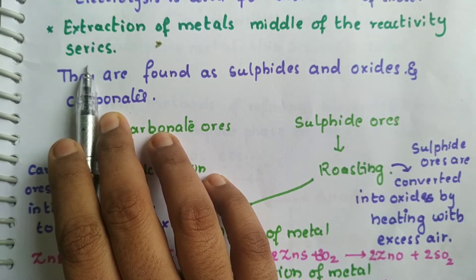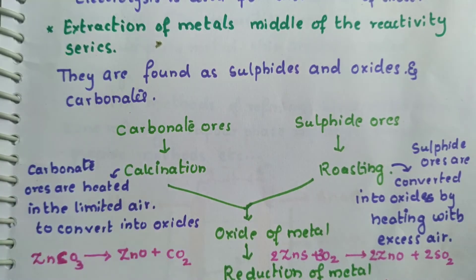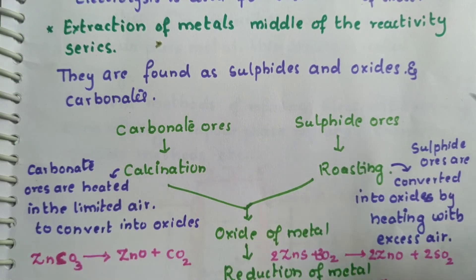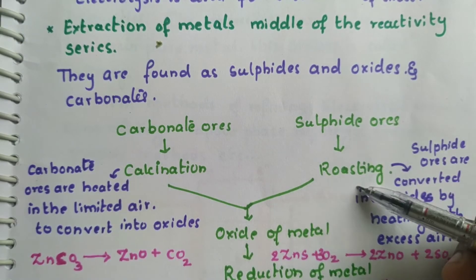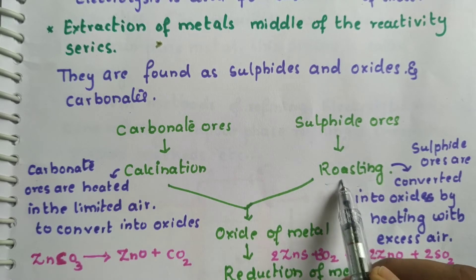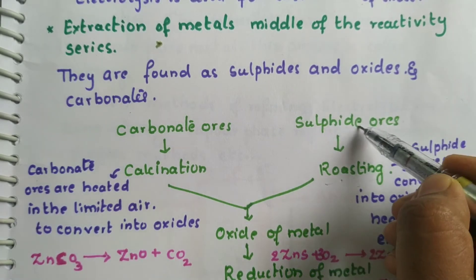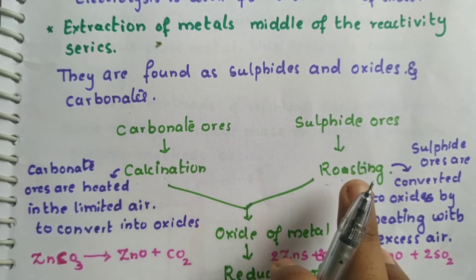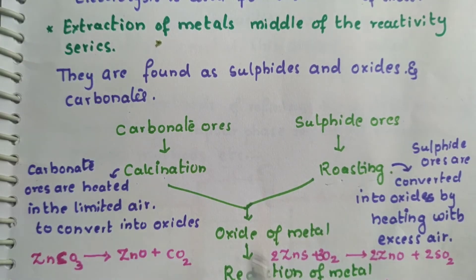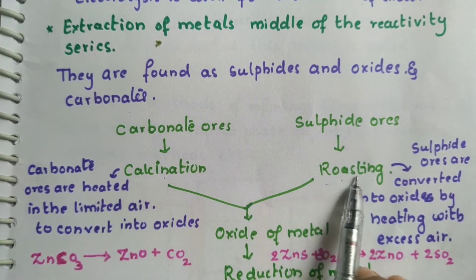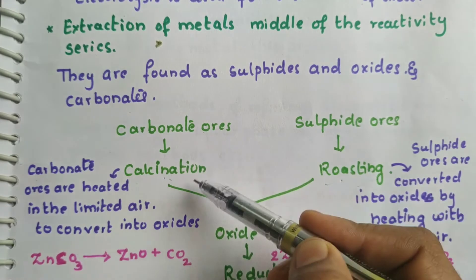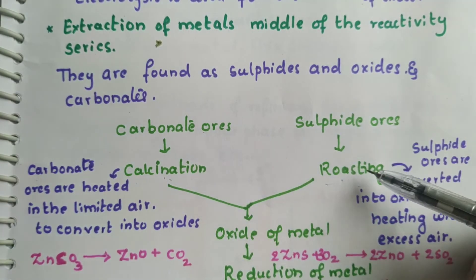Moderately reactive metals are found as carbonates or sulfides. For sulfide ores we do roasting, and for carbonate ores we use calcination. After both calcination and roasting, we get the oxides of that ore. After calcination of carbonate ores, we get the oxide; after roasting of sulfide ores, we also get the oxide.